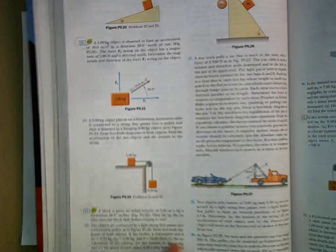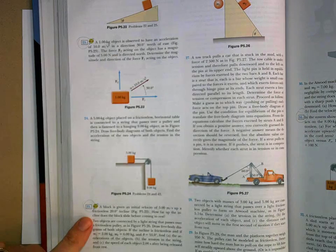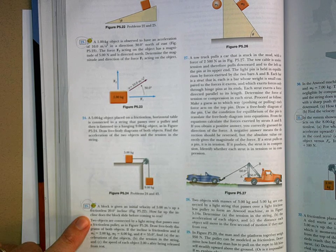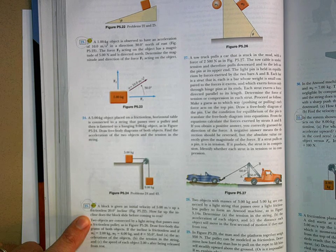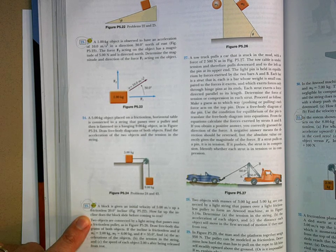Let's do problem number 25 on page 142 and let's read the problem. It's right here. It says a block is given an initial velocity of 5 meters per second up a frictionless 20 degree incline.